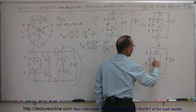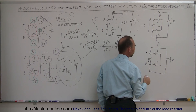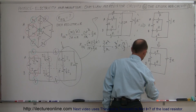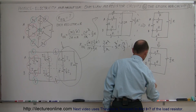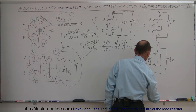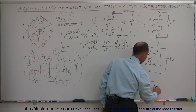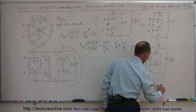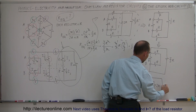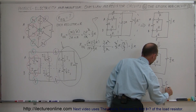Continuing on, we can now simplify the two remaining side resistors — those are a single series branch equal to 2R. Redrawing again: we have A and B, a single resistor between them with value R, the combined branch of value 2R, and one more branch coming out with value 5/2 R.